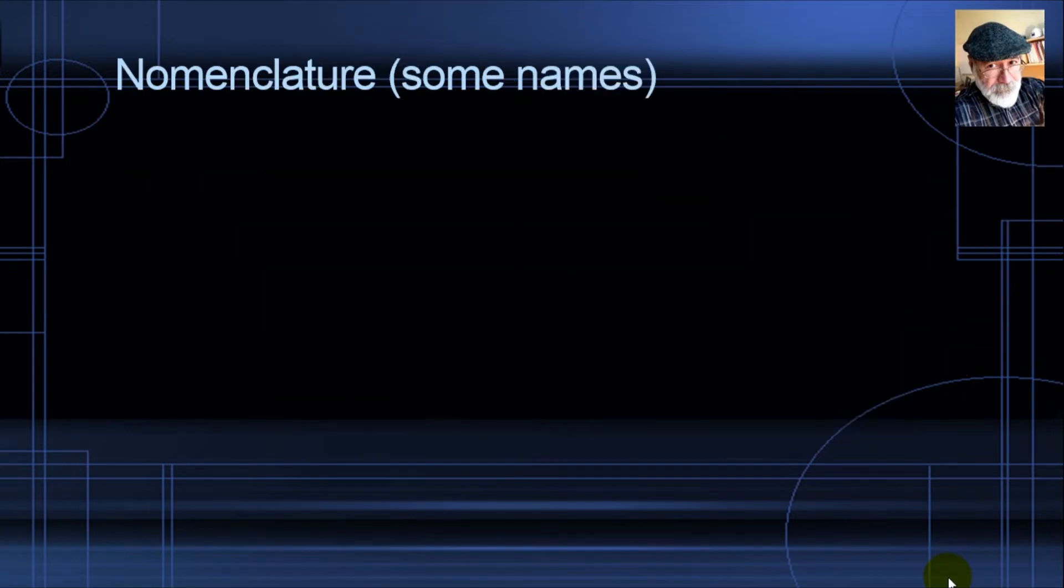Before we begin, let's start with some nomenclature. What is nomenclature? It is just a collection of words used in science, in technology, or by an individual to describe his activity.